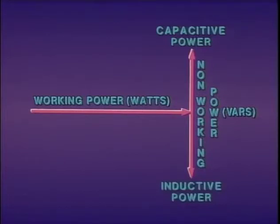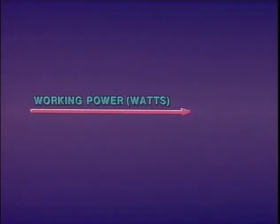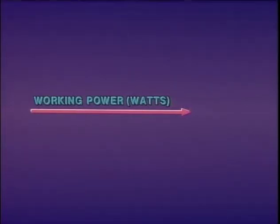Both capacitive power and inductive power may be present in a T&D system at the same time. If they're equal in value, they will cancel each other out, leaving only working power. The effect of this relationship can be shown using another simplified illustration.